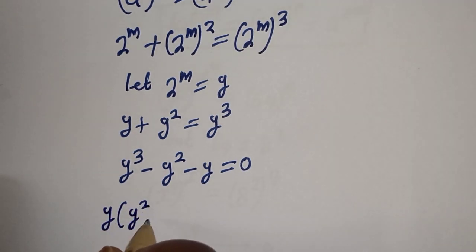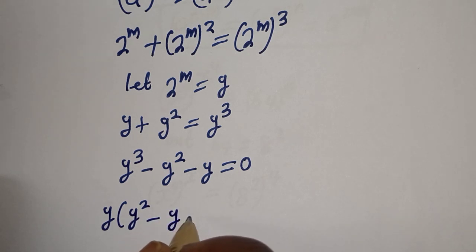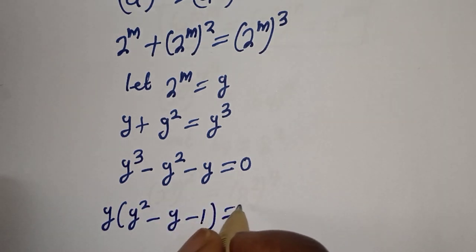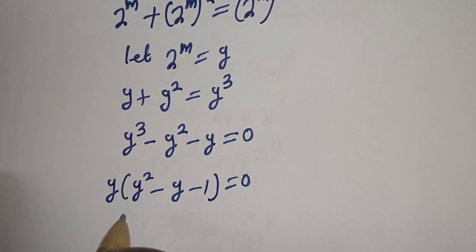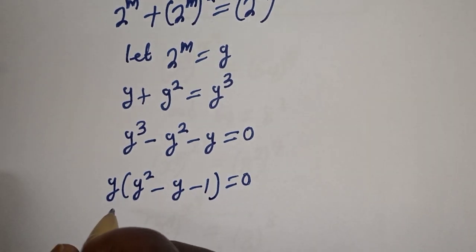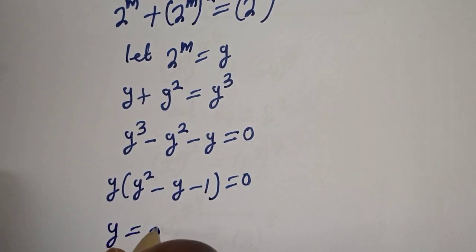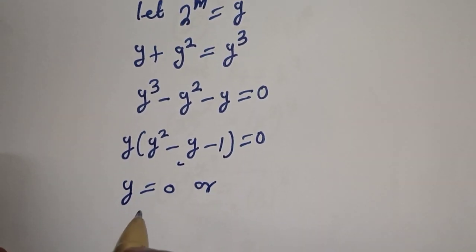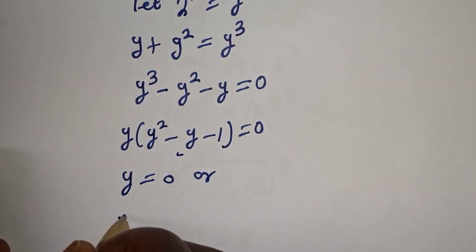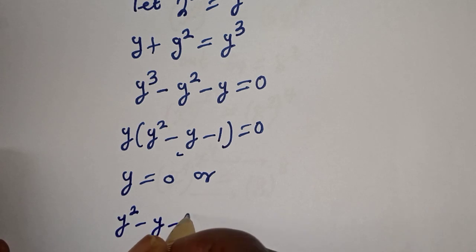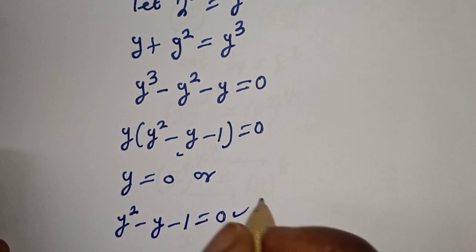Let's factor y out: y times the bracket y squared minus y minus 1 is equal to 0. There are two cases here. The first case is y is equal to 0, or the second case: y squared minus y minus 1 is equal to 0.